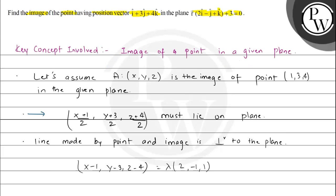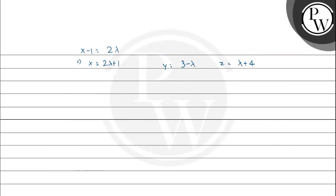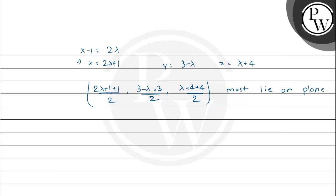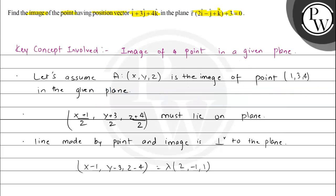We substitute these x, y, z values into the midpoint coordinates and require the midpoint to lie on the plane. So ((2 lambda + 1 + 1)/2, (3 - lambda + 3)/2, (lambda + 4 + 4)/2) must satisfy the equation of the plane.